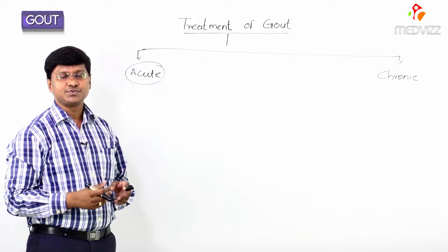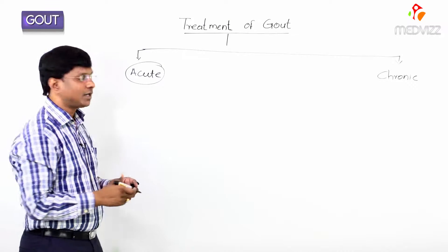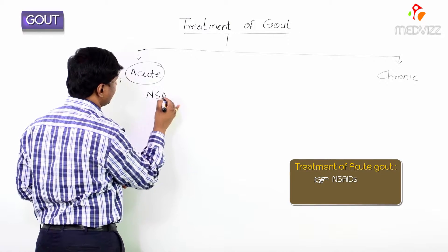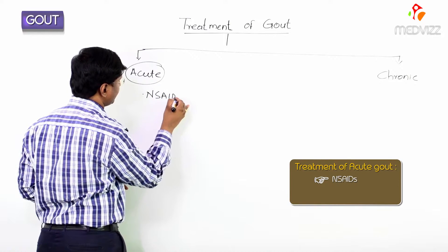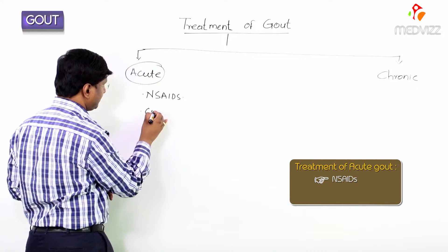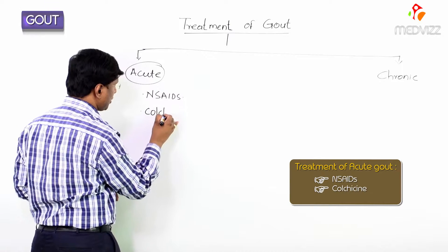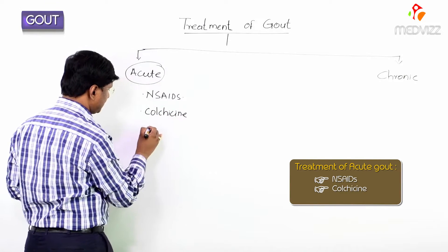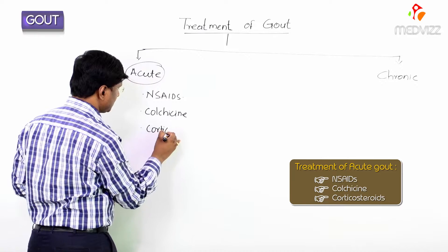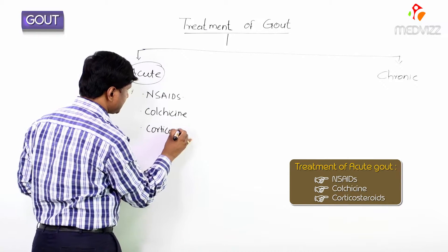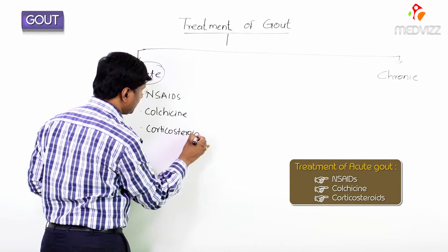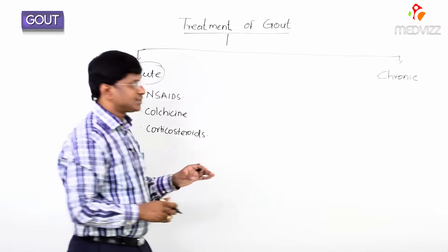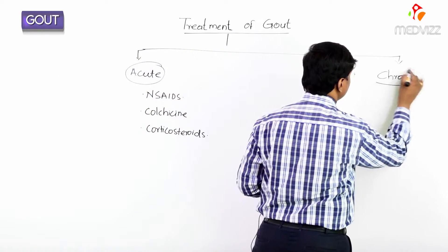The group of drugs given in the treatment of acute gout are NSAIDs (nonsteroidal anti-inflammatory drugs), colchicine, and corticosteroids.